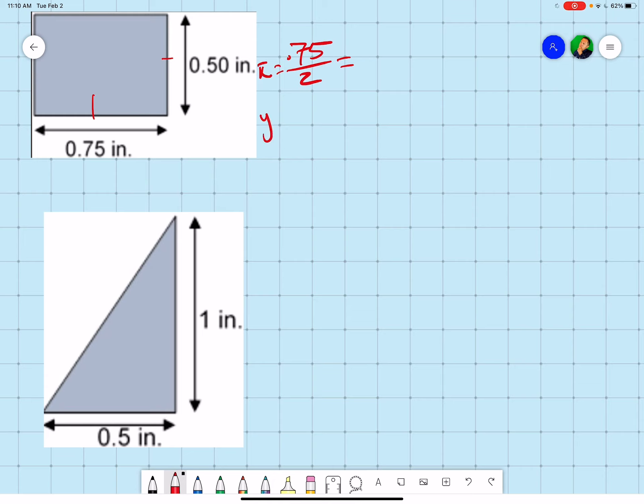Our y is going to be 0.5 divided by 2. So we get 0.38 for our x and we'll get 0.25 for our y.